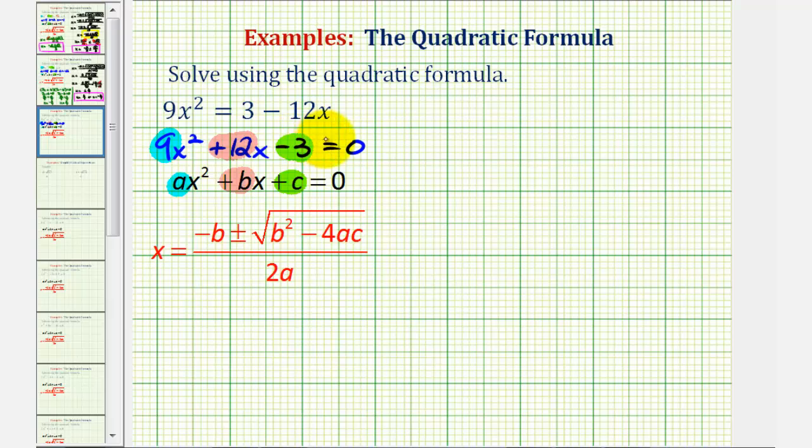We'll use these values to perform substitution into the quadratic formula. So we'll have x equals negative b, or negative 12, plus or minus the square root of b squared minus 4ac, which would be 12 squared minus 4 times 9 times negative 3.